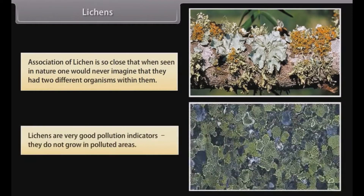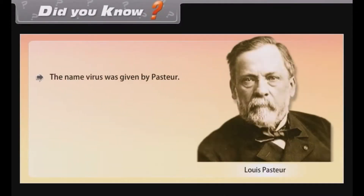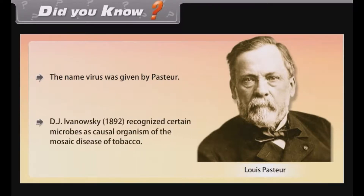Lichens are very good pollution indicators — they do not grow in polluted areas. The name virus was coined by Pasteur. D.J. Ivanowski in 1892 recognized certain microbes as the causal organisms of the mosaic disease of tobacco.